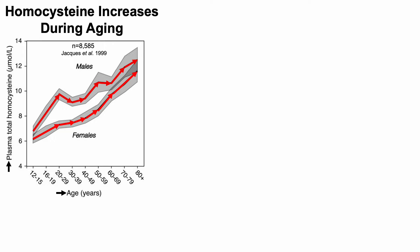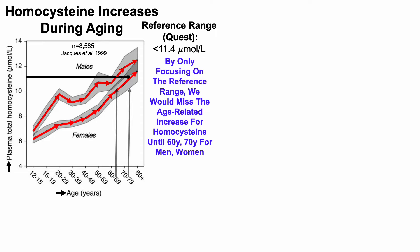Homocysteine levels in youth are around 7 micromolar, whereas they increase to about 12 micromolar in older than 80-year-olds, at least in this study. The reference range, at least defined by Quest Lab, is a homocysteine level less than 11.4 micromolar as potentially being optimal. If we put that line for 11.4 micromolar on this graph, we can see that by only focusing on the reference range, we would miss the age-related increase for homocysteine until 60 years old for men and 70 years old for women.